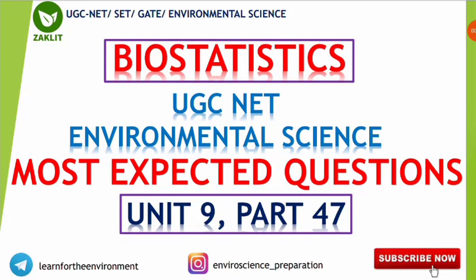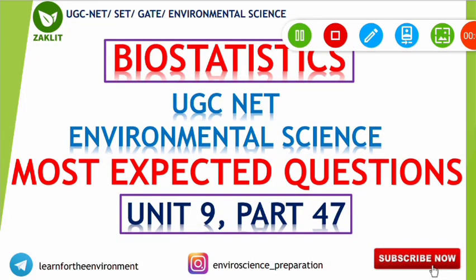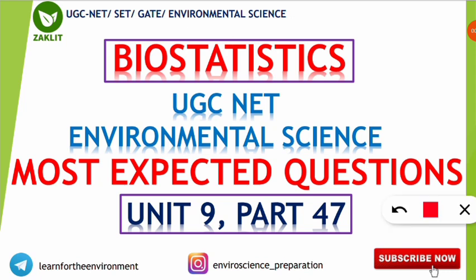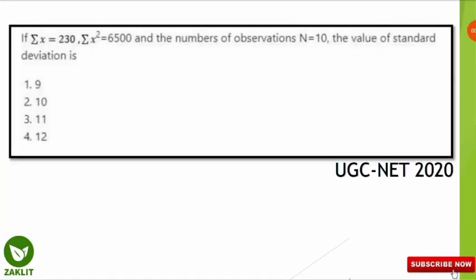Hello everyone and welcome back to Jack Lit Educational Channel. This is part 47 for the expected questions of the syllabus-wise UGC NET Environmental Science paper. We are dealing with Unit 9, that is the Biostatistics part. If you haven't subscribed to the channel, subscribe to get further updates. You can also join our Telegram and Instagram pages — the links are provided in the description below.